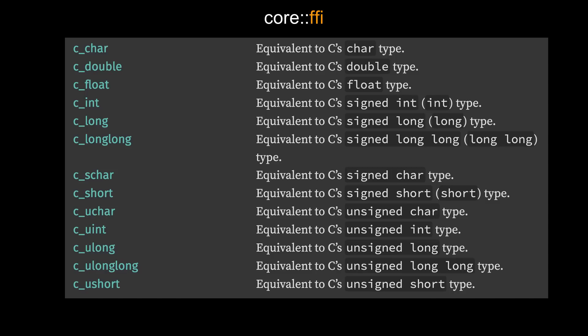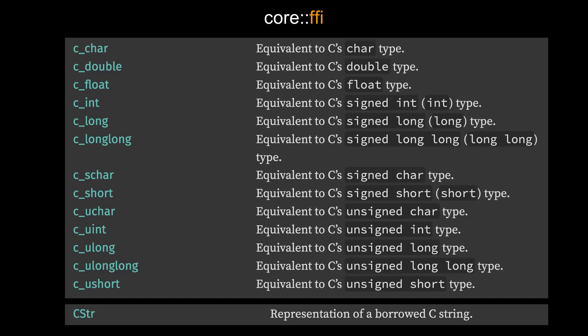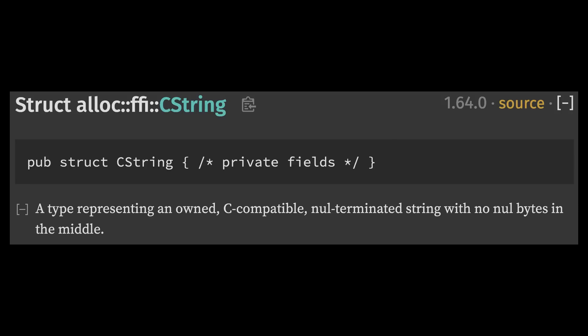As of this release, all C-type aliases, such as c_uint and c_ulong, are provided in the core FFI module. Previously, these type aliases were only available in the standard library, which meant code written for embedded targets could not use them. In addition, the CStr type used for working with C strings is available in the core FFI module, and the CString type used for working with owned C strings is available in the alloc crate.